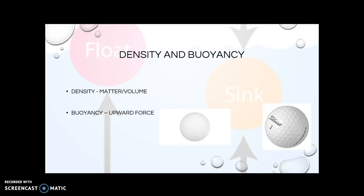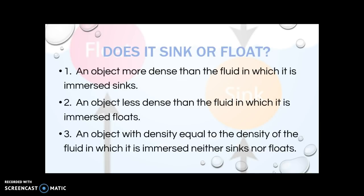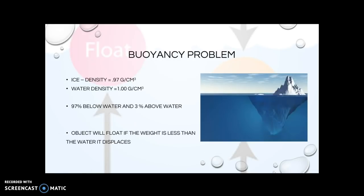Density affects buoyancy. The more of the object above the water, the more buoyant it is. Less dense than water means it's going to float. We have to determine what sinks and what floats based on whether something is more dense or less dense than the fluid. And what happens if they have equal density? Sometimes that happens too.